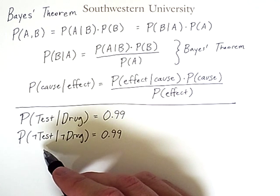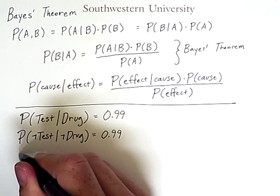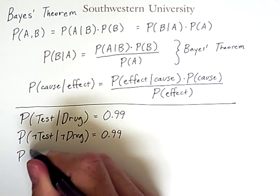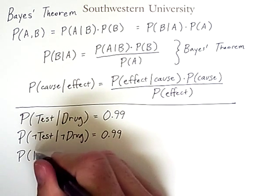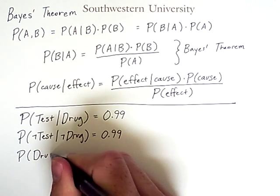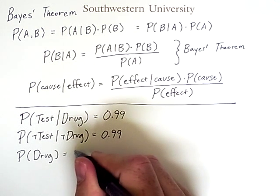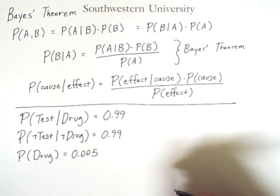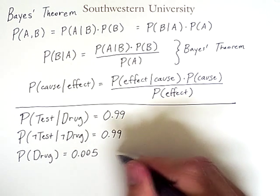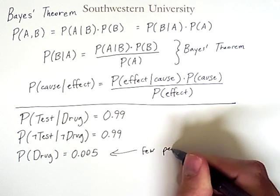Seems like a really good test, but what if the prevalence of people within the general population that actually use this particular drug is fairly small? So it's 0.005. So just to emphasize what's going on here, this means that very few people use the drug.